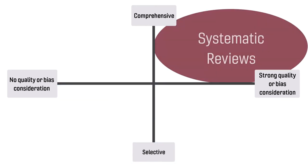Systematic reviews, on the other hand, are highly structured, clearly defined, and aim to be comprehensive and account for bias and quality of material that is included in the review, as well as the bias and quality of the review itself.